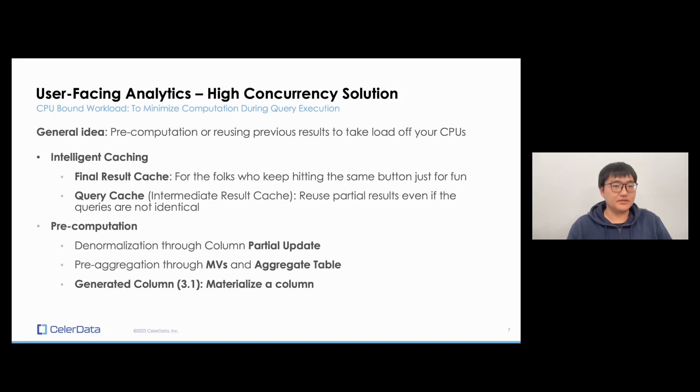And then let's go to more CPU-bound workload. And this, the CPU is put at work. So what we want to do is to actually minimize the amount of computation a CPU has to do during the query execution. There are basically two ways to do this. First is through pre-computation. So you just anticipate what is going to be queried by the user. And you prepare that result beforehand. Pre-computation, pre-aggregation, denormalization. Or you can use the previous result from other users or from the same user. And you reuse the result or the partial result to take load off your CPU.